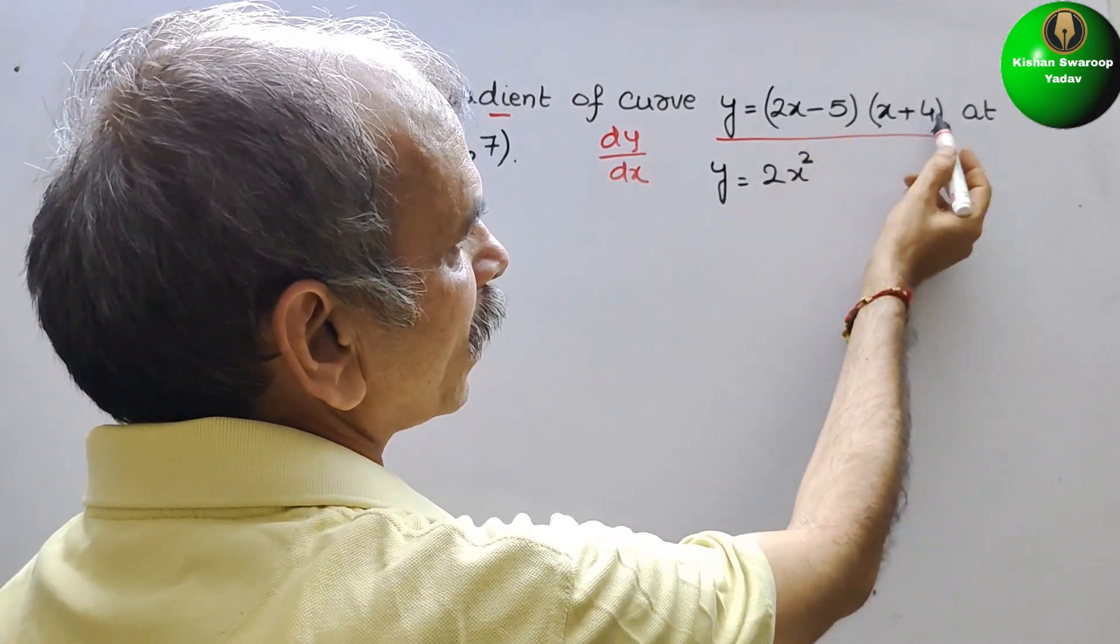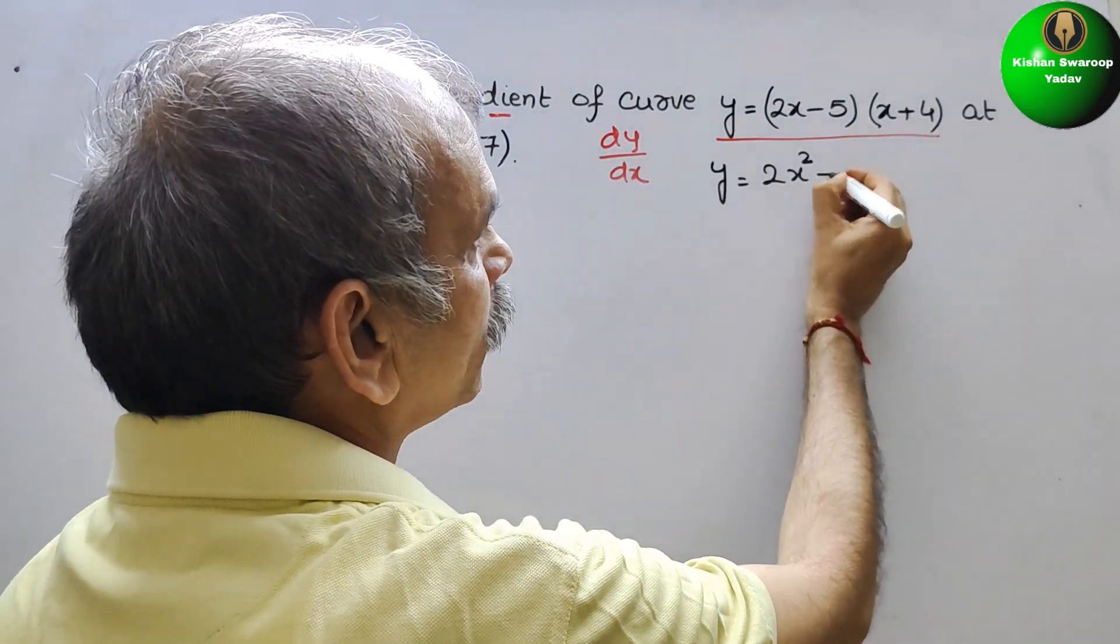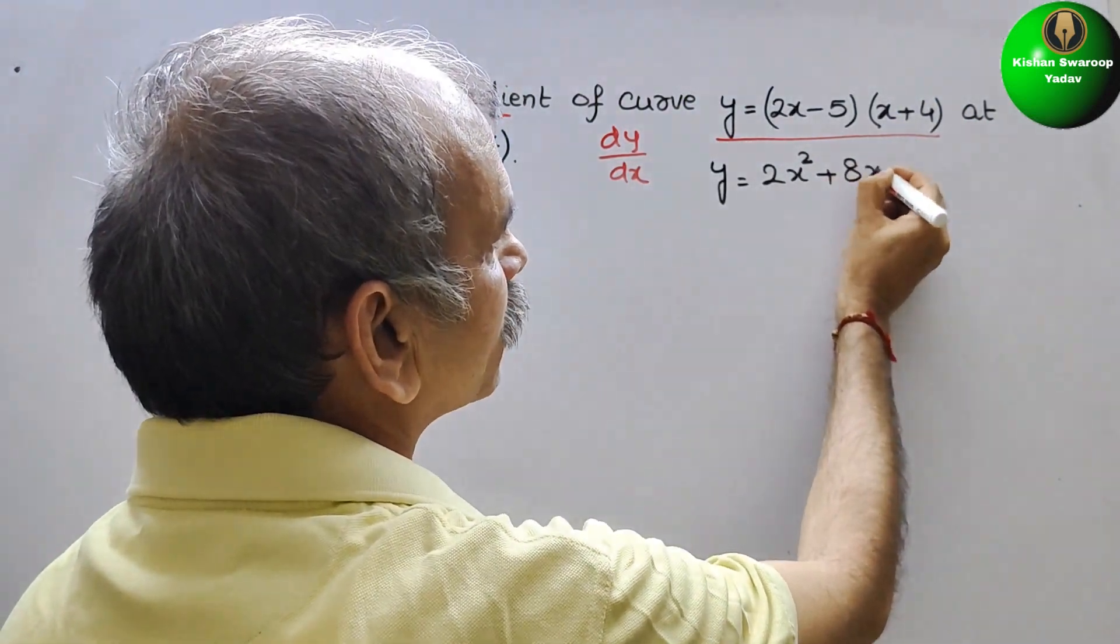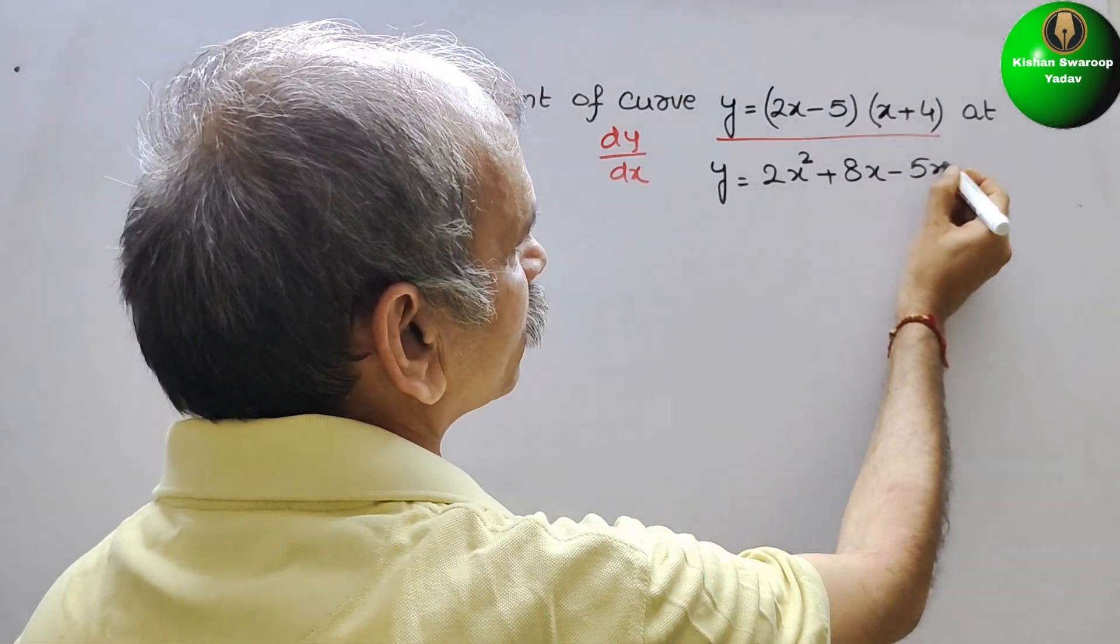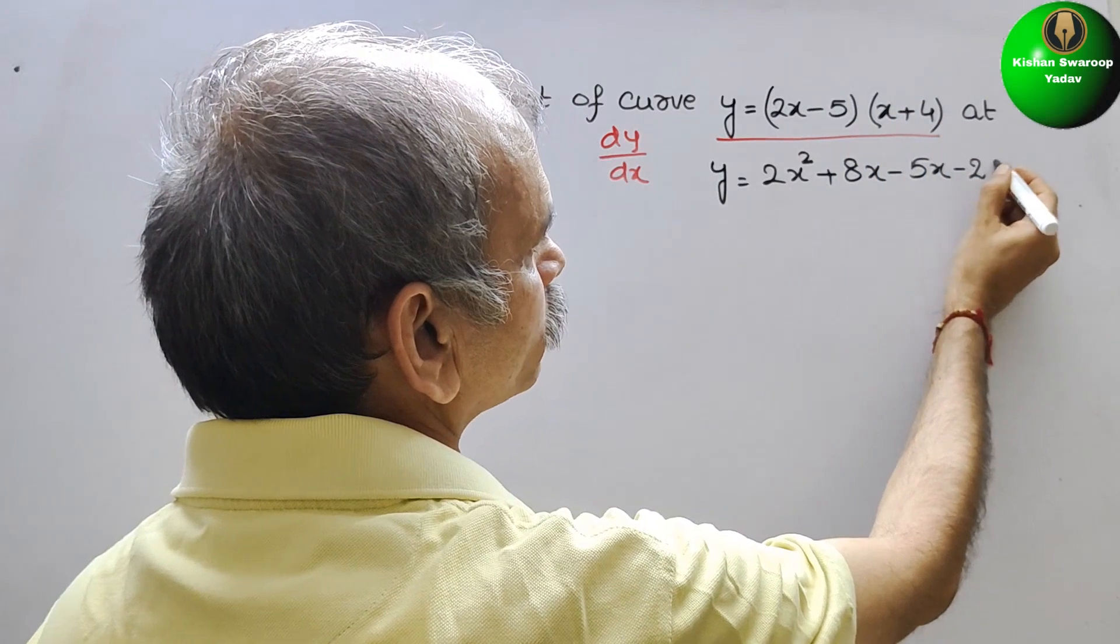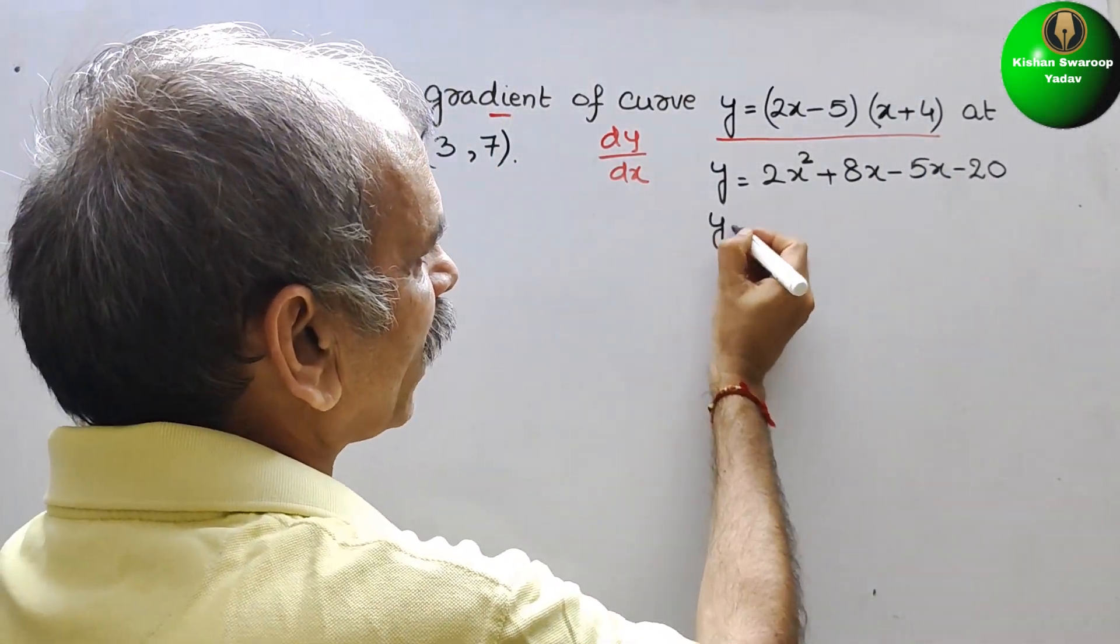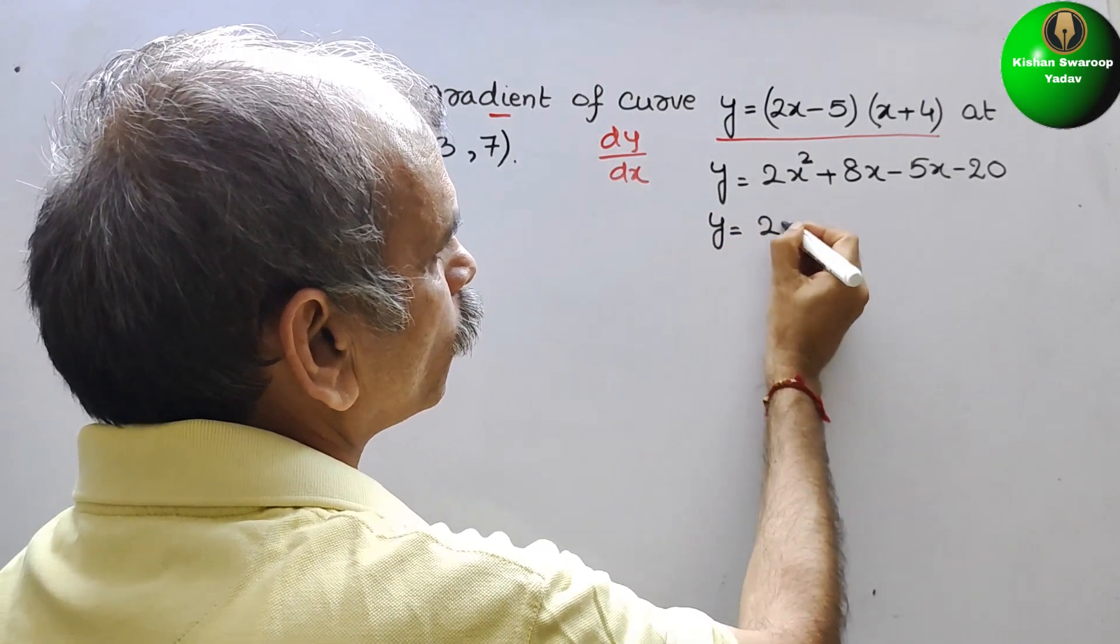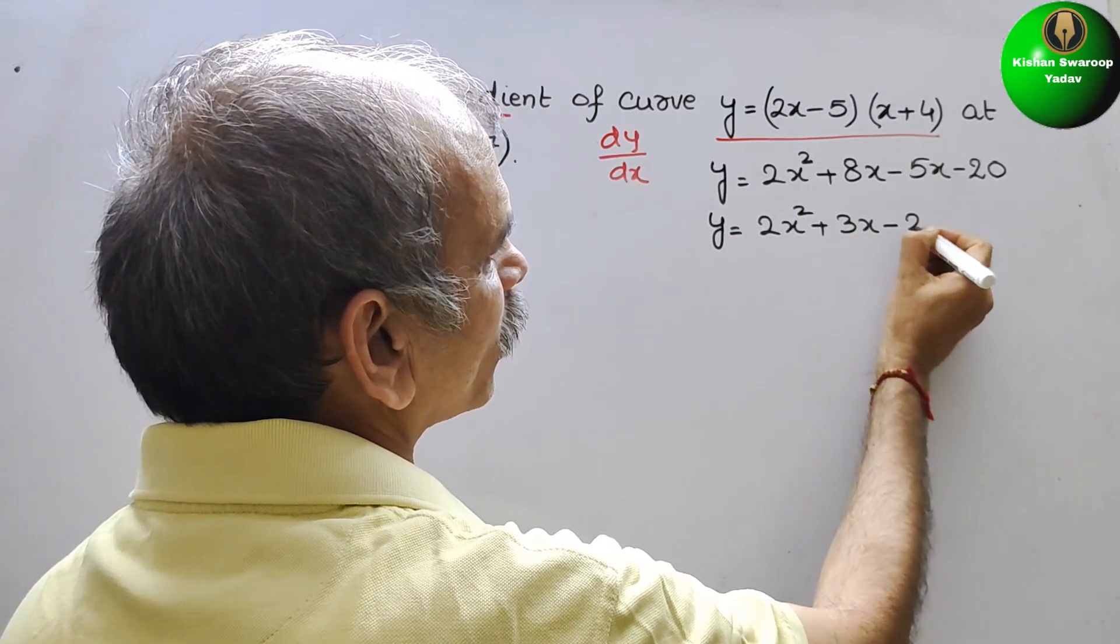Then 2x into 4 is plus 8x. Minus 5 into x is minus 5x. Minus 5 into 4 is minus 20. If you solve this you will get y is equal to 2x square plus 3x minus 20.